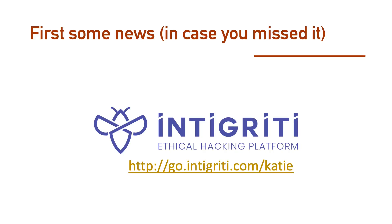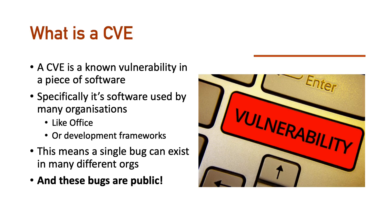So let's talk about CVEs. The question is: what is a CVE? You might have seen this on Twitter especially this week. A CVE is a known vulnerability in a piece of software. Unlike bug bounty hunting where you're hunting on an end product, when you're looking at CVEs you're looking at things that those end products use — software used by many organizations. Think about how big finding a vulnerability in Office would be; every company uses Word, or a development framework like PHP or WordPress.